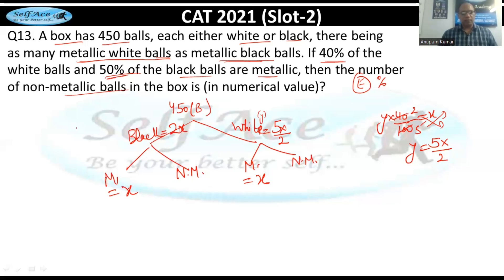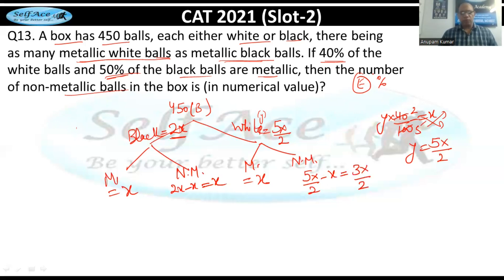For black balls: total = 2x, metallic = x, so non-metallic black = x. For white balls: total = 5x/2, metallic = x, so non-metallic white = 5x/2 − x = 3x/2.